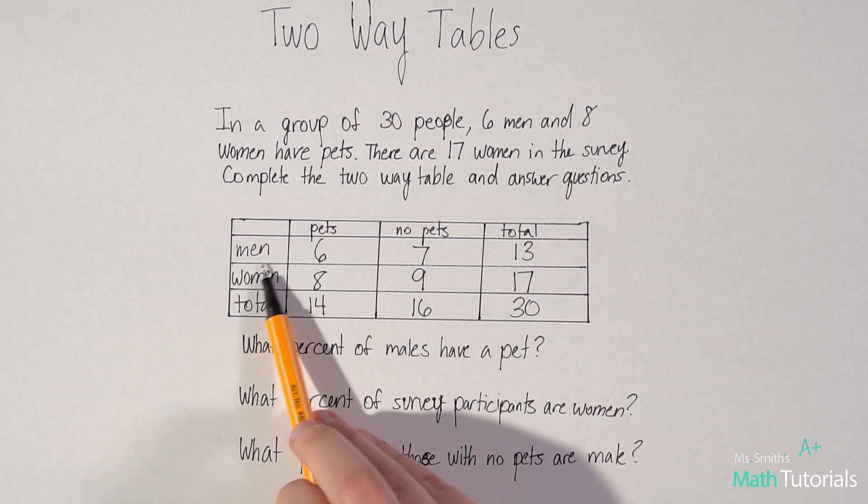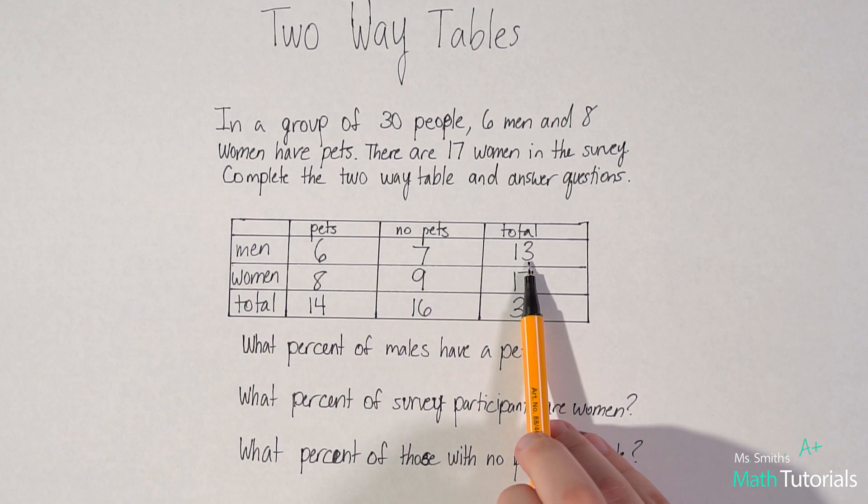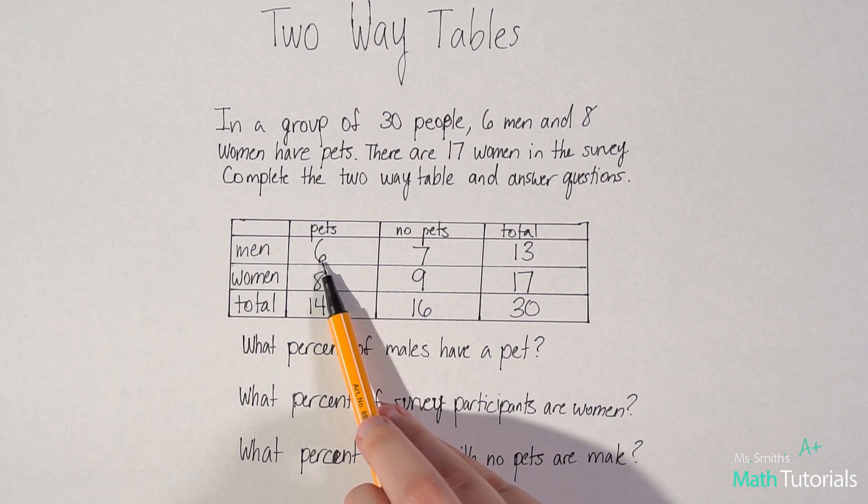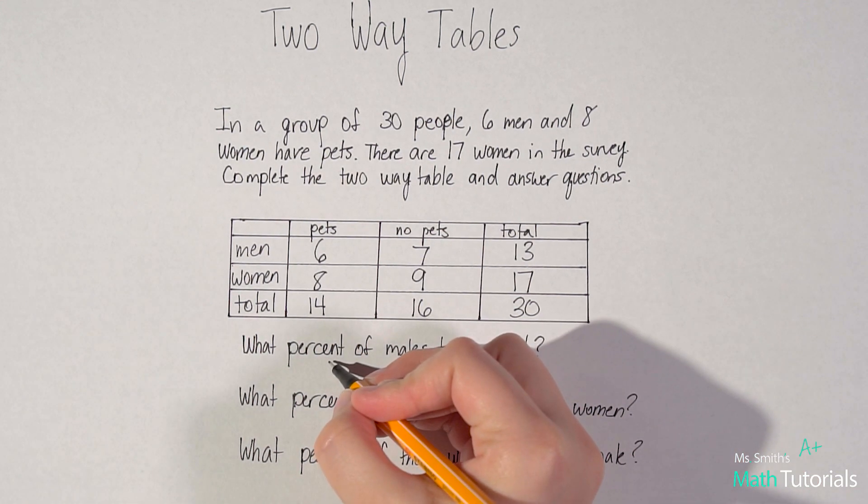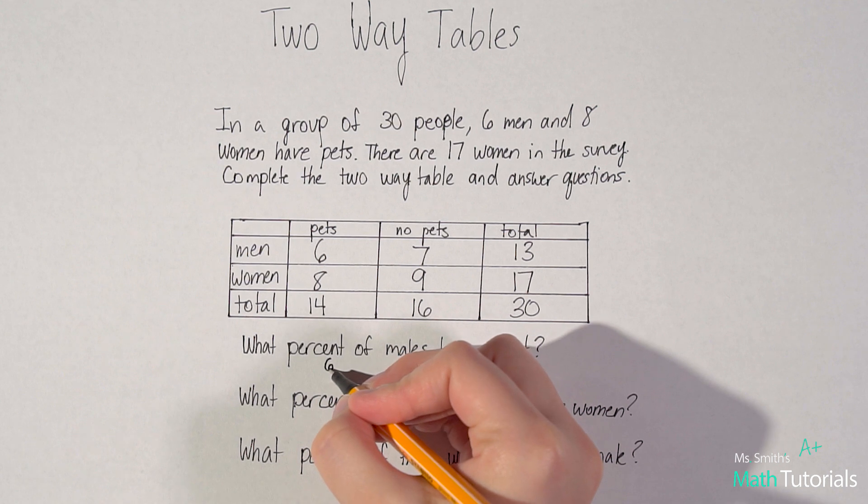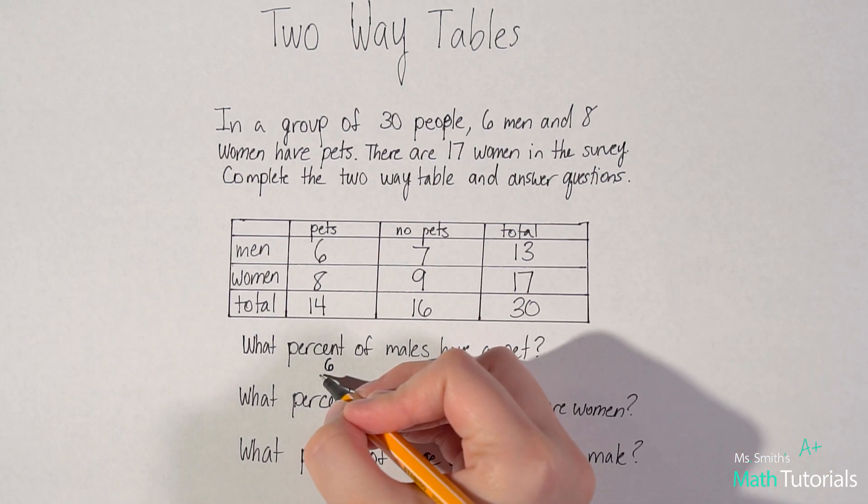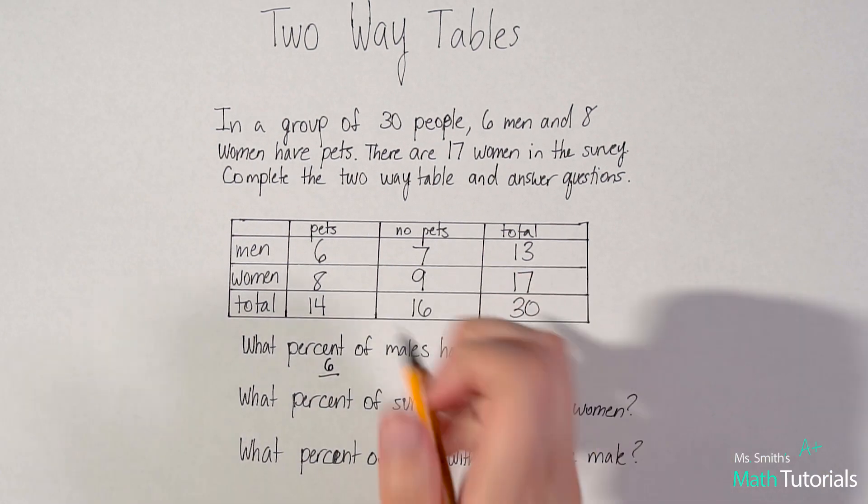So I see that there were 13 men total. Okay. And six of them have pets. So to figure that out, I would do the total number of men with pets, six, divided by the total number of men, 13.